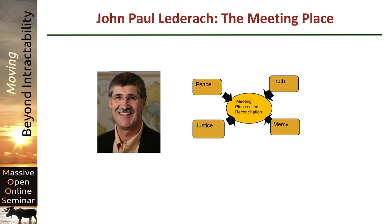The reason I like his formulation so much, and particularly the teaching exercise he developed based on that, is that it highlights all the contradictions between these four elements. For example, if one focuses on truth or justice, the accused are not likely to be pleased — they may continue fighting rather than trying to reconcile. But if one wants to stop violence, one may decide that it's best to grant mercy without deeply investigating the truth or dispensing justice. It's a matter of balancing or trade-offs, and also a matter of how you define and then pursue each of these components.